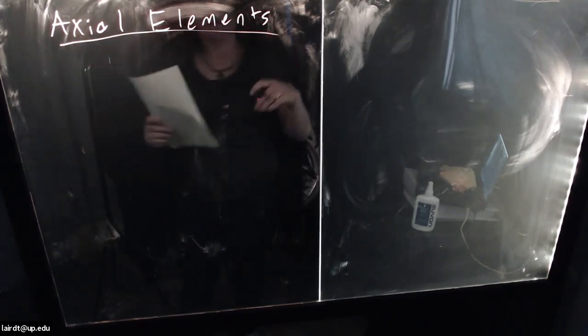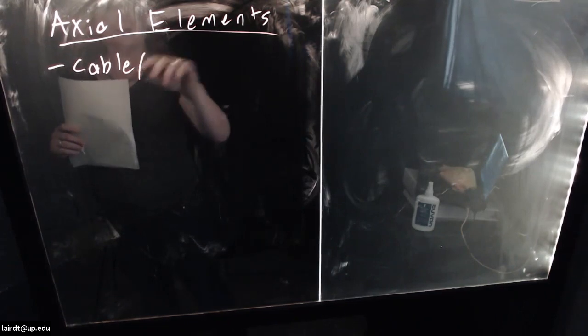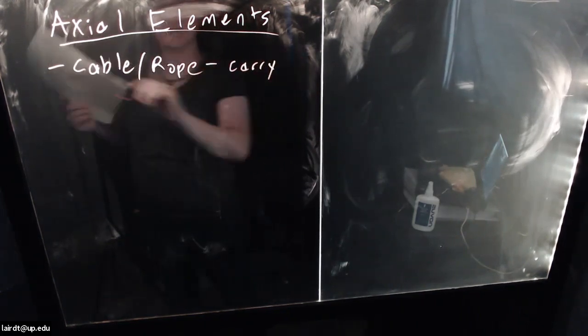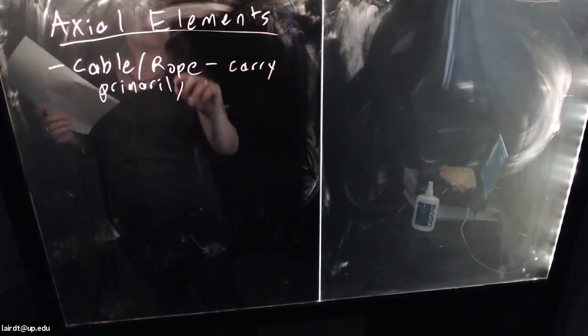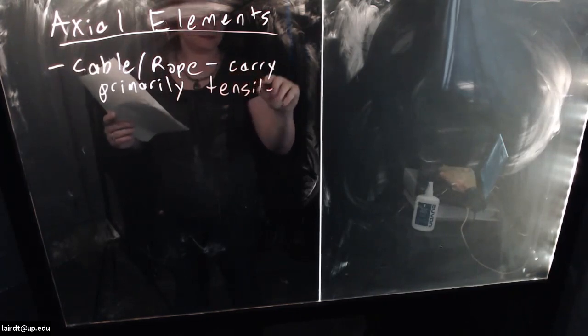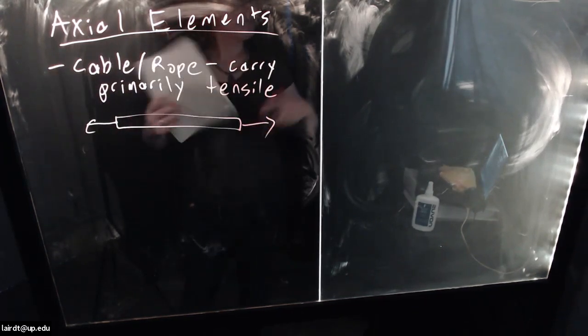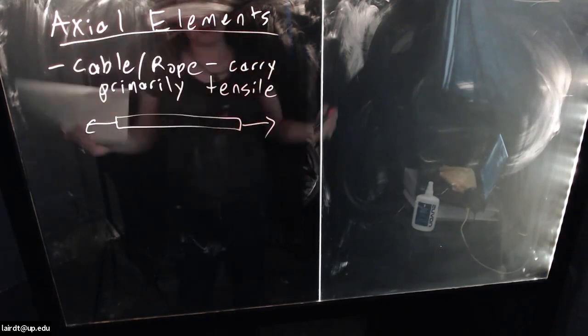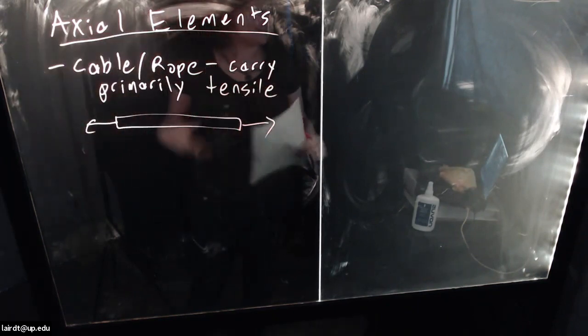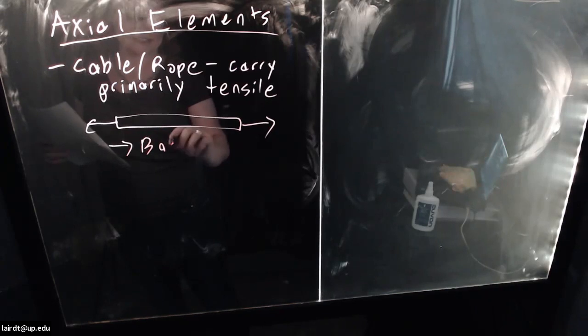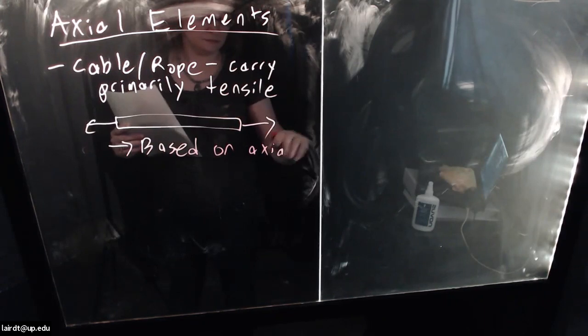The first type is axial elements — elements that primarily carry axial load. One example would be a cable or a rope. These carry almost solely tension — primarily tensile elements. These are relatively the simplest to analyze because you don't have to worry about buckling or geometric instability. You simply pull on it, it has a certain strength and generates a certain deformation. Its capacity is based on axial tensile strength.